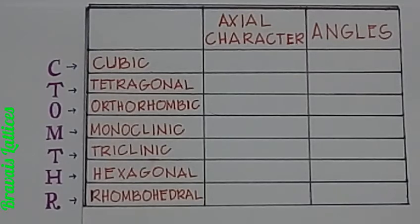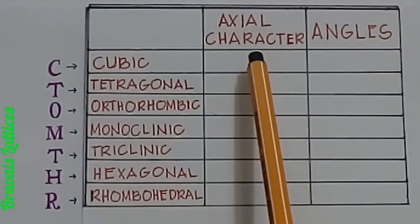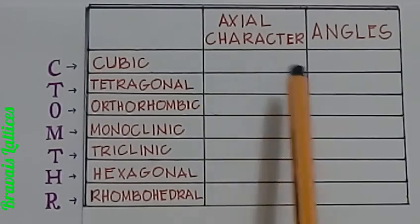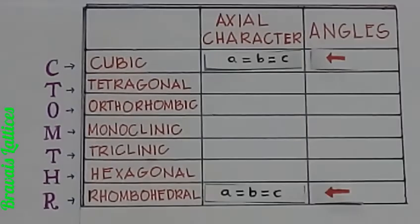Now let us check the axial characters for each of the systems. The first and the last box have the same axial character where all a, b, and c are equal.